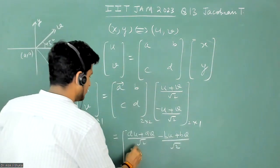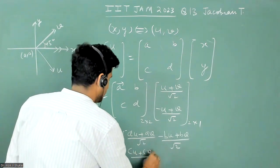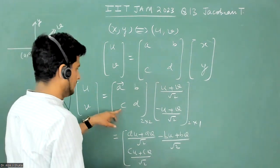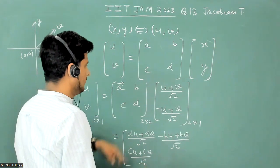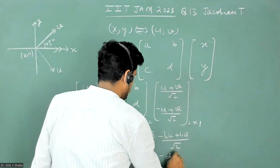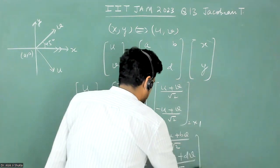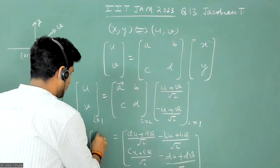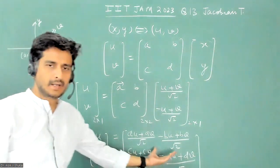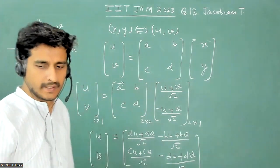And then this term: CU and CV by under root two, and minus DU plus DV by under root two. And this is equal to U, V. Now because these are equal matrices, this U is equal to this and this V is equal to this.